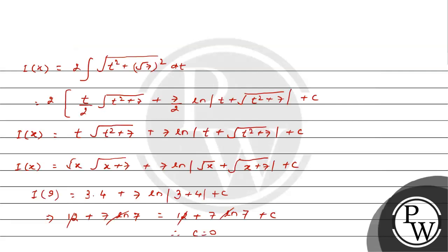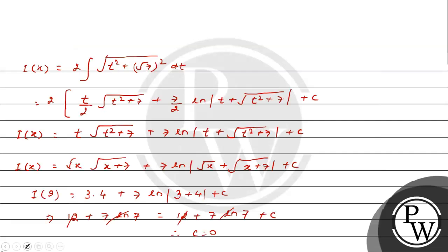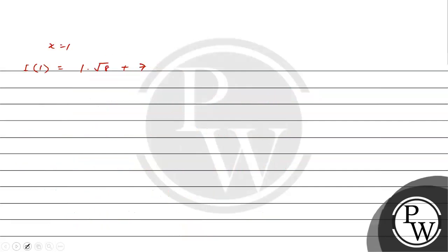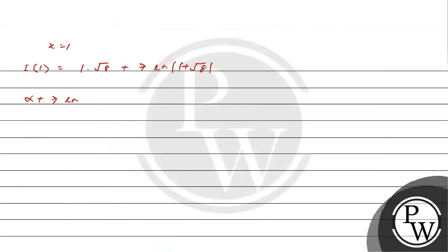Now for I(1): putting x equal 1, we get I(1) as 1 times √8 plus 7 ln|1 + √8| plus C. I(1) is given as α plus 7 ln(1 + 2√2). Since √8 equals 2√2, comparing these expressions we find α = √8 = 2√2.